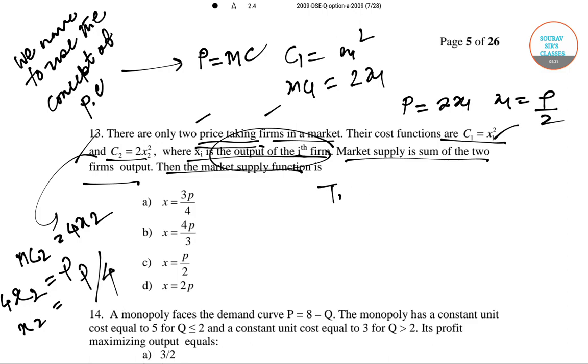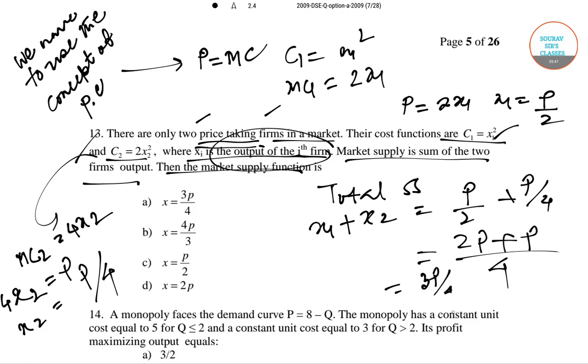Therefore the total supply X1 plus X2 is P by 2 plus P by 4, which equals 3P by 4. Suppose this total supply equals capital X. If this is true then we can write X equals 3P by 4. So this is the correct answer.